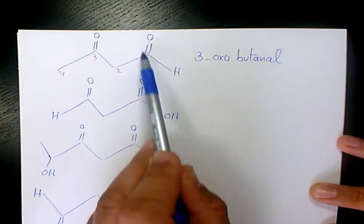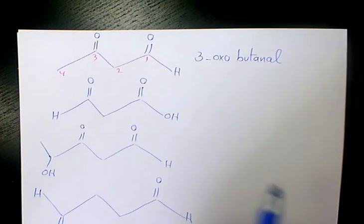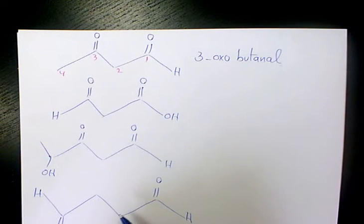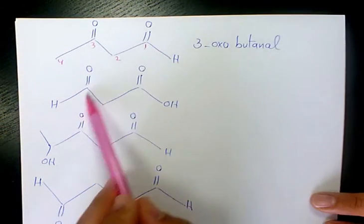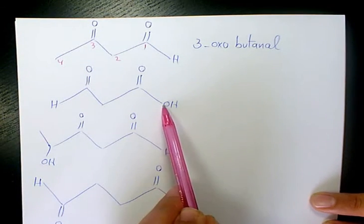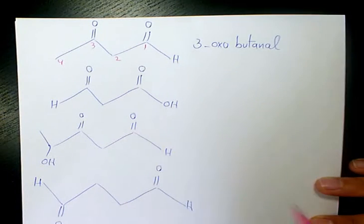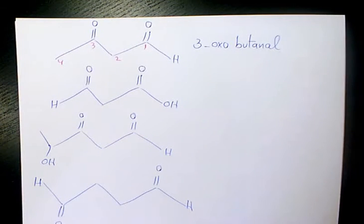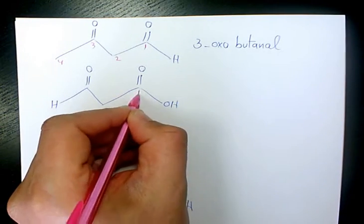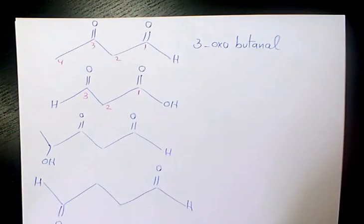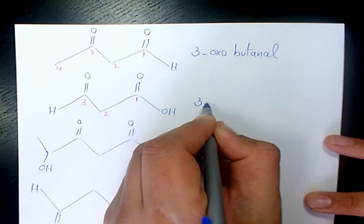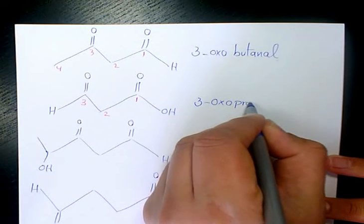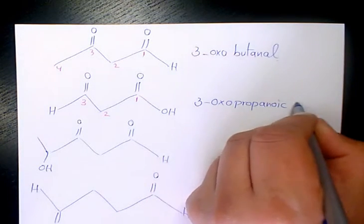It ends with '-al' because we are dealing with an aldehyde. Whenever we have an aldehyde connected to a branch of carbons, we use the suffix '-al'. For the next one, we have an aldehyde group and a carboxylic acid, because the carbon connects to OH. Carboxylic acid has higher priority than aldehyde, so we number from that side: one, two, three — giving us 3-oxopropanoic acid.